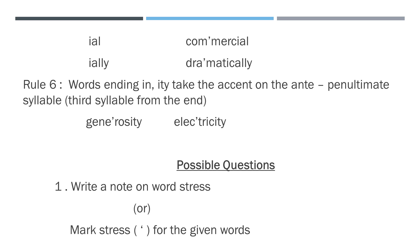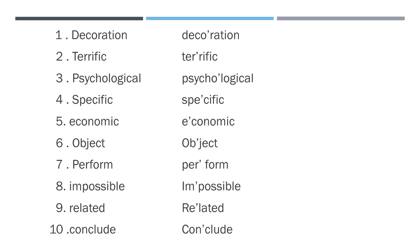Now coming to the questions. Write a note on word stress — for this question write all the rules of stress patterns with examples. There is an internal choice for this question: you have to mark stress for the given words. The stress mark is a vertical bar placed before the stressed letter. Words to practice: decoration, terrific, psychological, specific, economic, object, perform, impossible, related, conclude. The answers are provided for your reference on the right side.